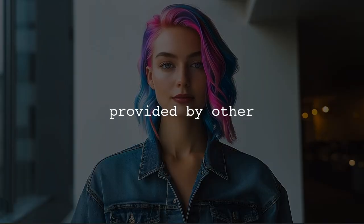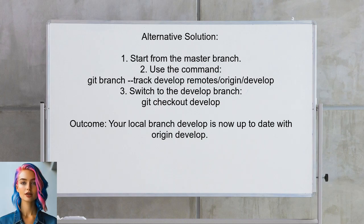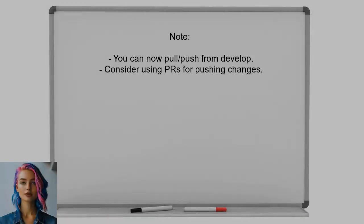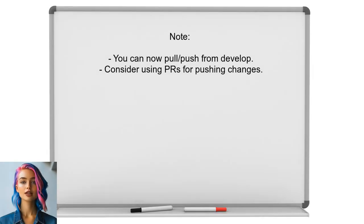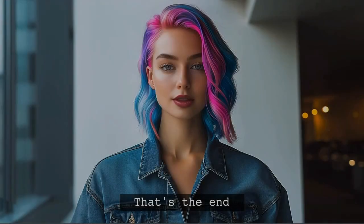Now let's look at answers provided by other users. An alternative approach involves tracking the remote develop branch without creating a local branch first. Starting from the master branch, you can use the command to track the remote branch directly. This method allows you to pull and push from the develop branch, though it's recommended to use pull requests for pushing changes to develop.